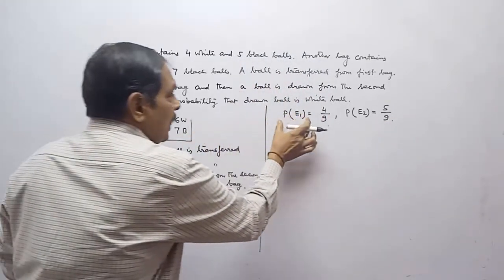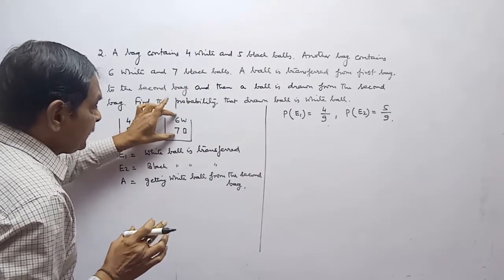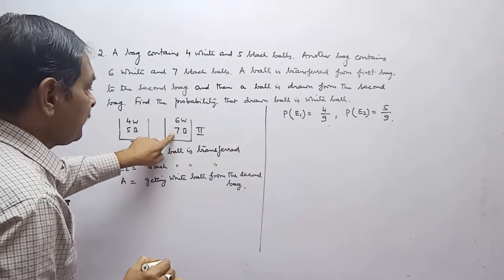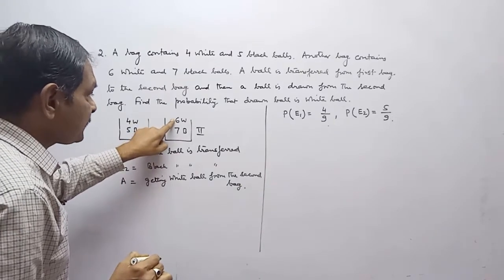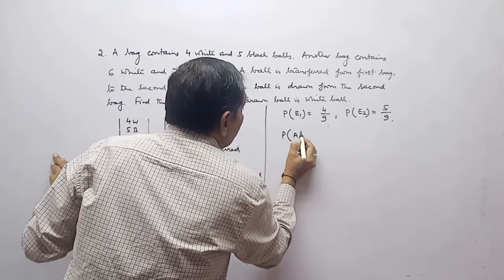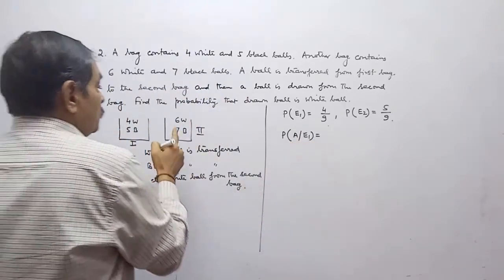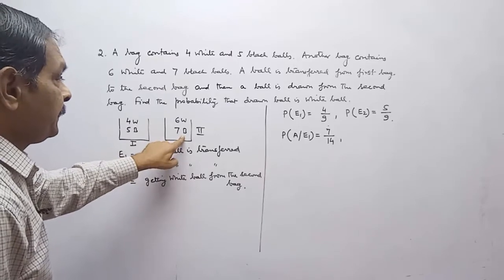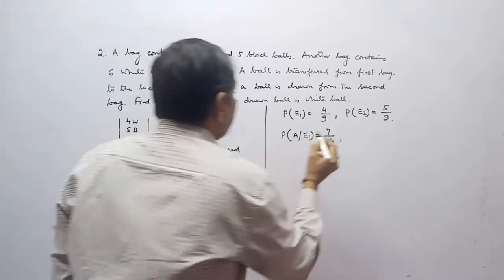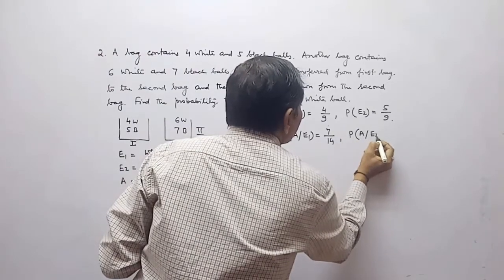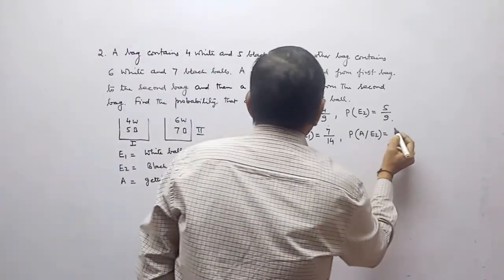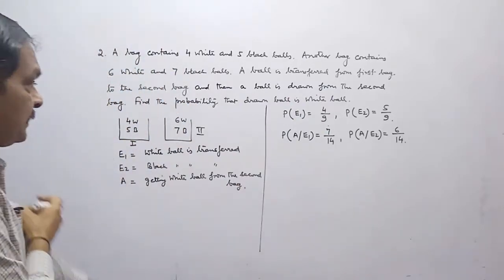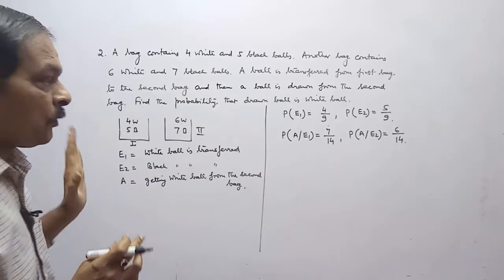When E1 has occurred, meaning a white ball is transferred to the second bag, it now has seven white and seven black balls. So probability of A given E1 is seven upon 14. And when a black ball is transferred, probability of A given E2 is equal to six upon 14, since six balls will be white and total will be 14.